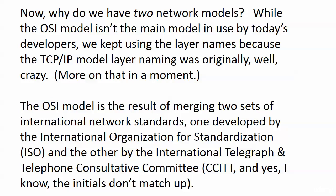So why do we have two models? The OSI model is not the main model in use by today's developers, but we keep using the OSI layer names and numbers because the original TCP/IP model layer naming was confusing. The OSI model itself is actually the result of a merger of two sets of international networking standards — so it could be worse; we could have three models. One was developed by the International Organization for Standardization — the ISO — and the other by the International Telegraph and Telephone Consultative Committee, CCITT.